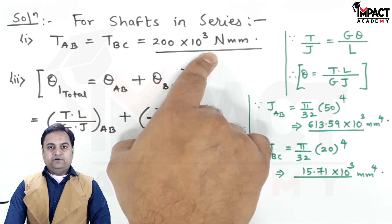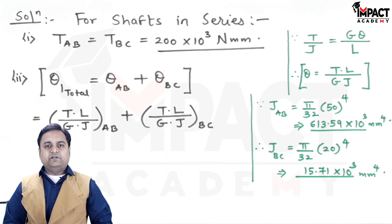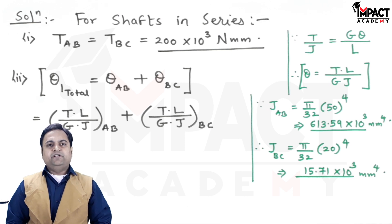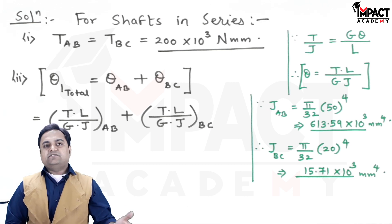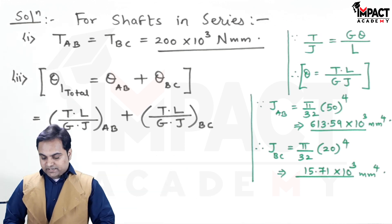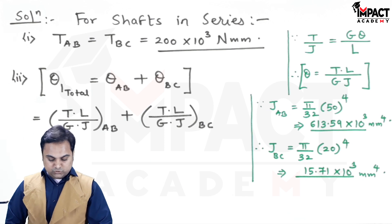After getting these J values, we know the torque is constant for shafts in series. Since the material is the same, with only one modulus of rigidity given, we can take T and G common.